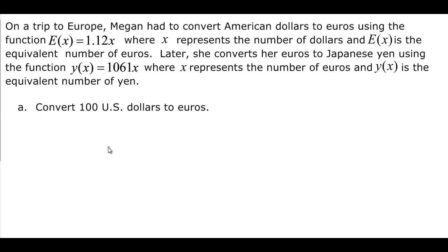Okay, one more composition question. On a trip to Europe, Megan had to convert American dollars to euros, and she had this function. X is number of dollars. The function is equivalent to the number of euros, and then later she does it with Japanese yen using the functions that you see there. So the first part asks just to convert the hundred dollars to euros. So remember, X is the number of equivalent dollars. So we just have E of 100, and that will be equal to 1.12 times 100. When you multiply by 100, you move the decimal two places. So that's equal to 112 euro.